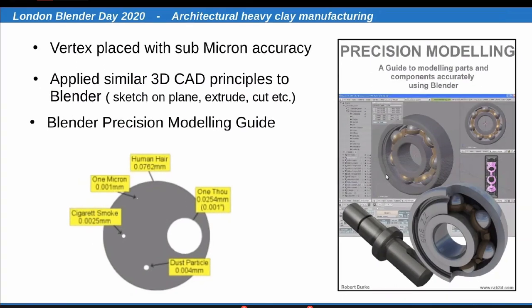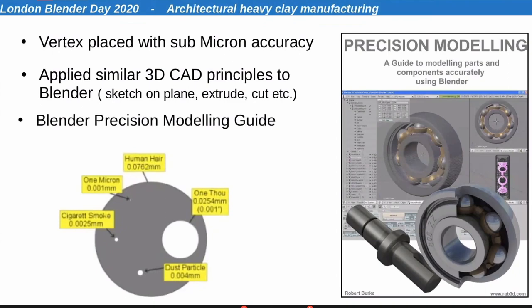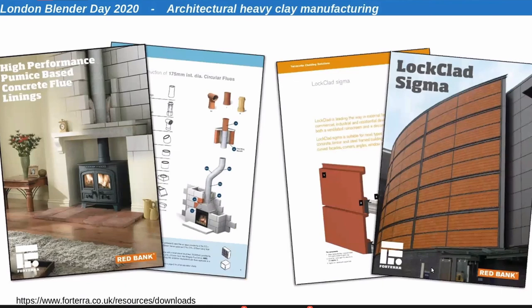The sort of products I was making at Red Bank where Blender was extremely influential were chimney systems and cladding systems initially. These are some of the works done in Blender — the cover of the terracotta brochure is a photograph, but nearly all the visualizations inside come out of Blender. All of the chimney system designs were done in Blender, and the design was only transferred to SolidWorks to get a paper dimensioned drawing out so we could make the production tooling. Everything else was done in Blender.